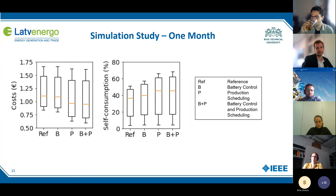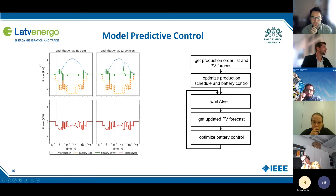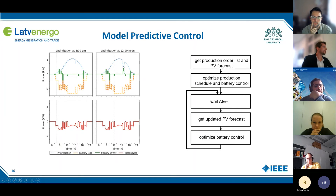We can see this in the model predictive control concept. Here we are using model predictive control to react to weather changes. In the morning, we optimize both the battery control and the production schedule, then we continuously optimize the battery control to react to uncertainties. If we get a new PV forecast with a big drop, we optimize again, resulting in a different battery control. The battery compensates the drop so that the load profile doesn't get a big peak, which would increase the costs a lot.